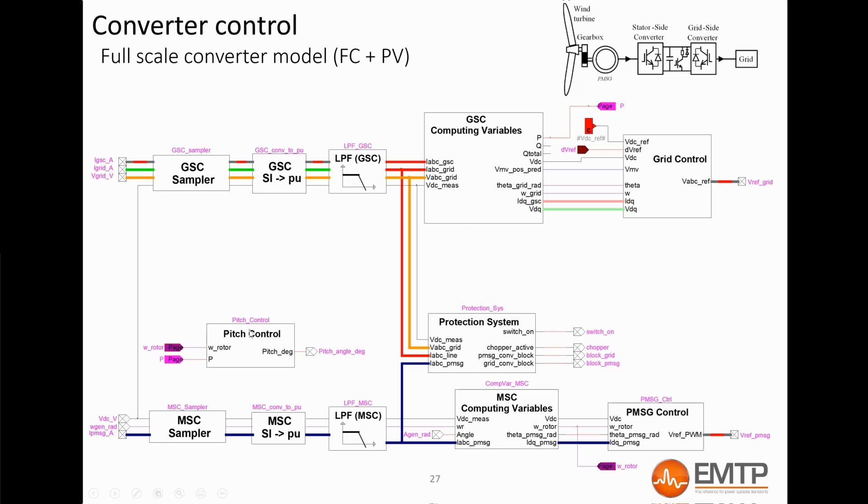The pitch control block limits the mechanical power extracted from the wind by increasing the pitch angle when the wind speed is above its rated. The protection system block contains cut-in and cut-off speed relays, low-voltage and over-voltage relays, machine-side converter and grid-side converter overcurrent protections, and DC resistive chopper control. The LVRT and OVRT functions are in this block. We will discuss this block in more details in another video.